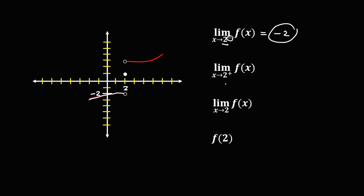Then for this given, the limit of the function as x approaches positive 2 to the right — looking at positive 2 to the right — therefore the limit is equal to positive 3.